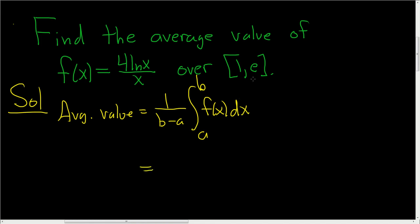And so in this case, it looks like a is 1 and b is e. So this is 1 over e minus 1.